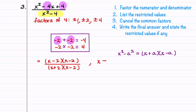Let's note that x can't equal minus 2 or 2, because these numbers make the denominator equal to zero. Now we cancel the common factor of x minus 2 from the numerator and denominator. That leaves us with a final answer of x minus 2 divided by x plus 2, with the restriction that x is not equal to minus 2 or 2.